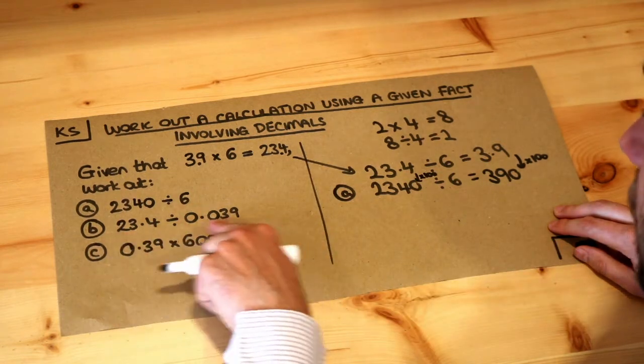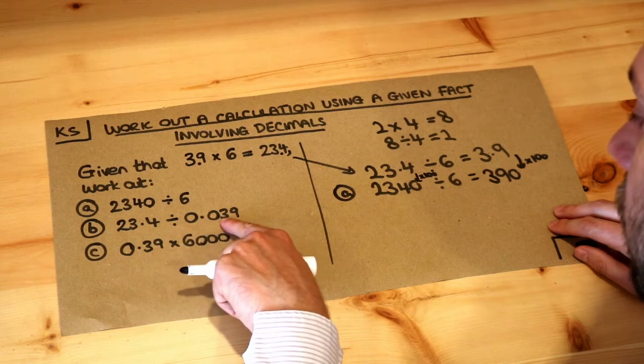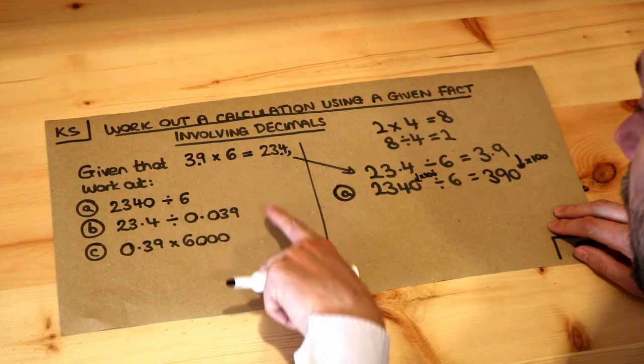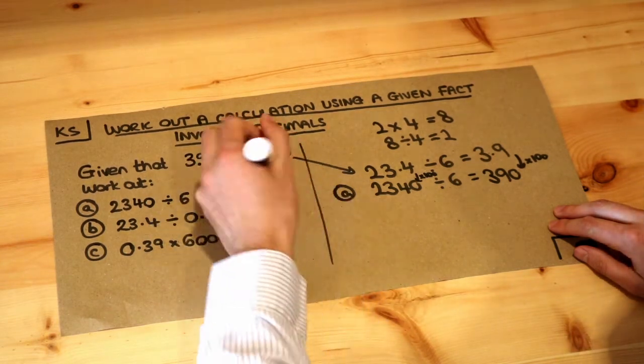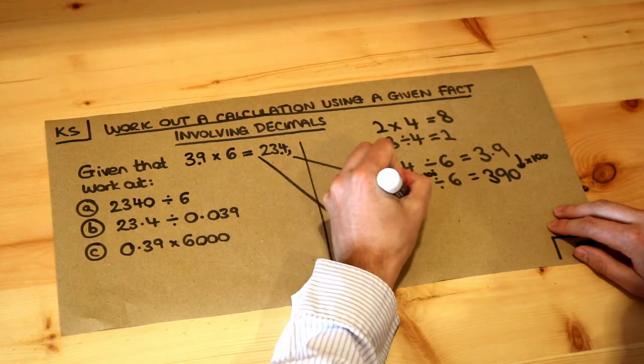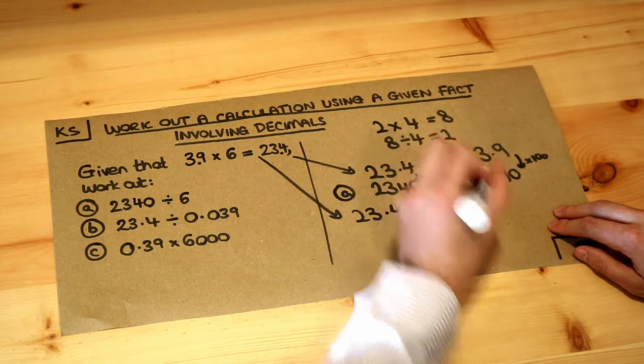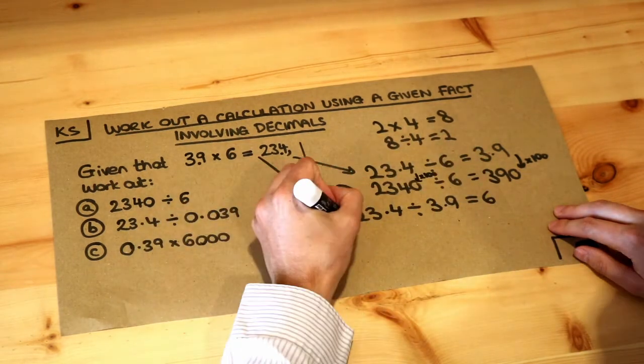What about the next one? Well, I'm going to have to rearrange this again because I've got the 0.039 here. That looks like the 3.9. So if I take this, I can say that 23.4 divided by the 3.9 is equal to 6. So let's compare that to what I actually have in B.